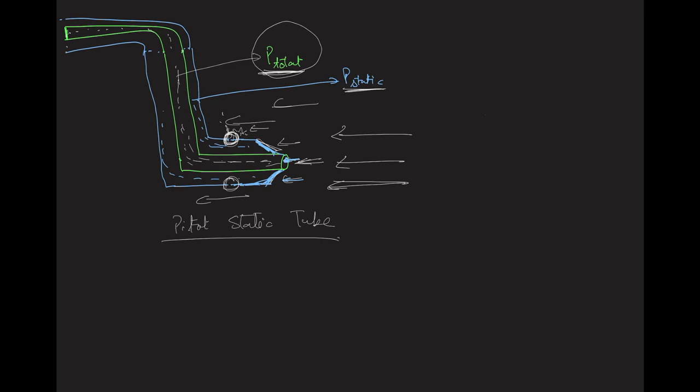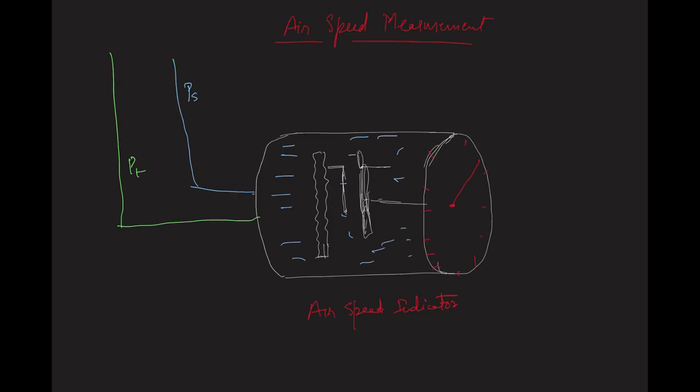This pressure sensed through the static holes is known as static pressure. So inside the blue tube we have static pressure and inside the green tube we have total pressure. Now let us understand how we can measure airspeed using the total pressure and the static pressure.